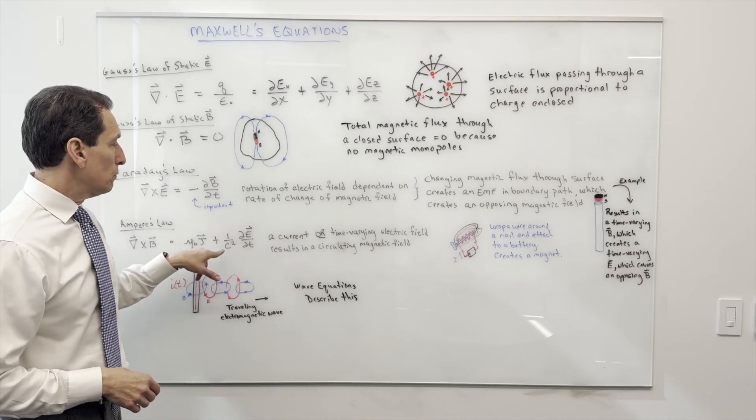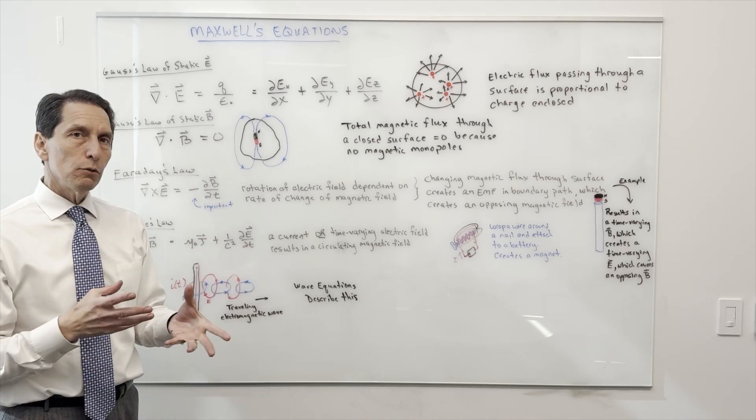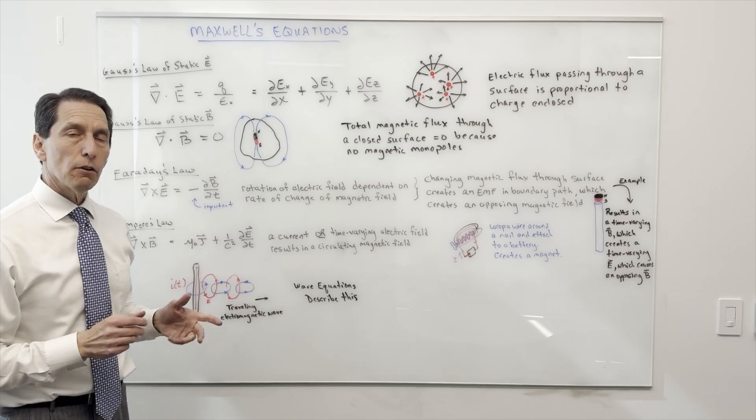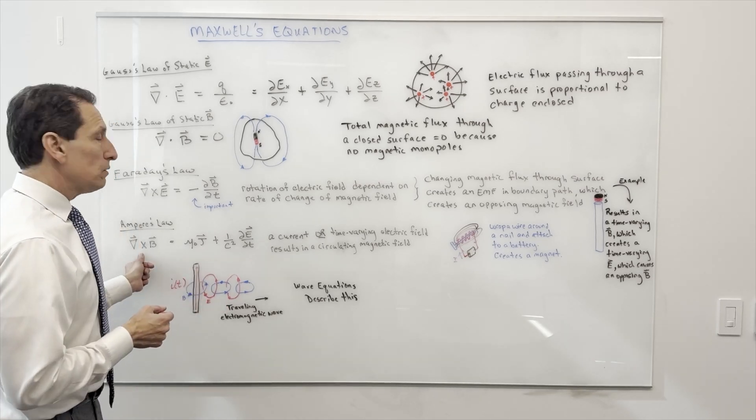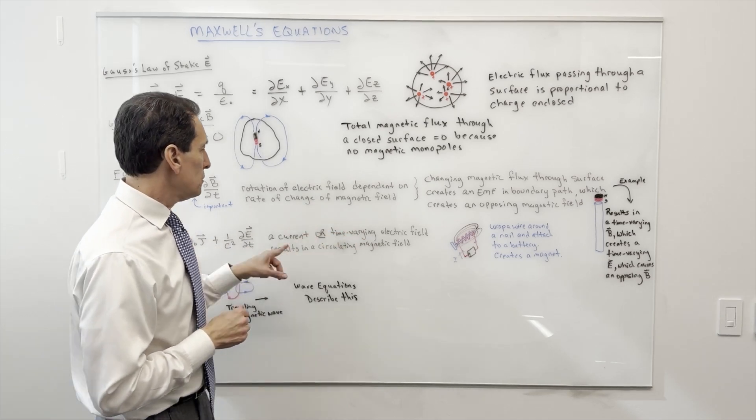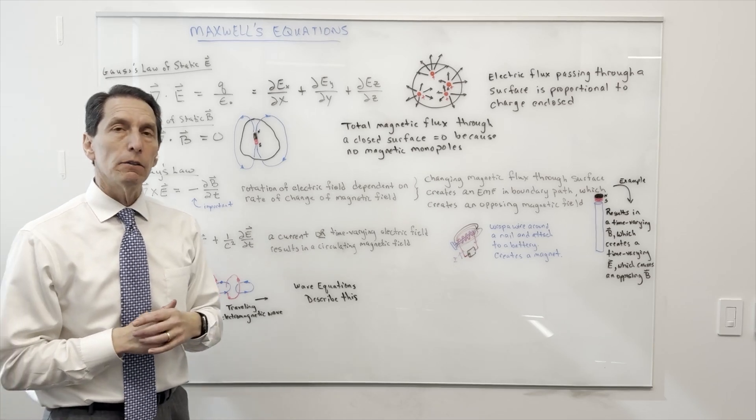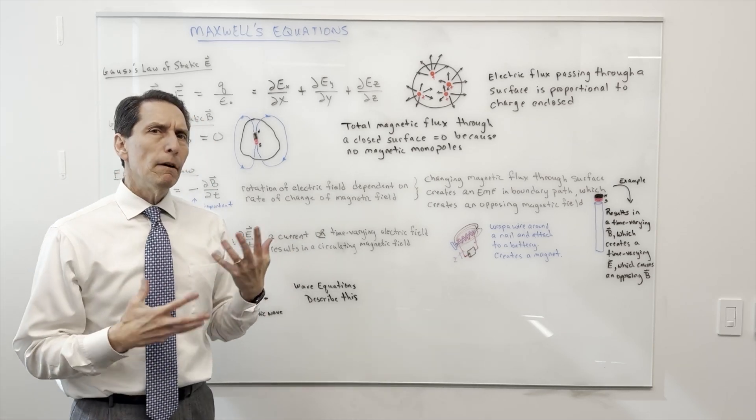Or you could have a time-varying electric field with some constant out front. So either time-varying electric fields or steady-state currents can cause a circling B field, a curling B field. In words, a current or time-varying electric field results in a circulating magnetic field. Pretty straightforward but very useful to know.